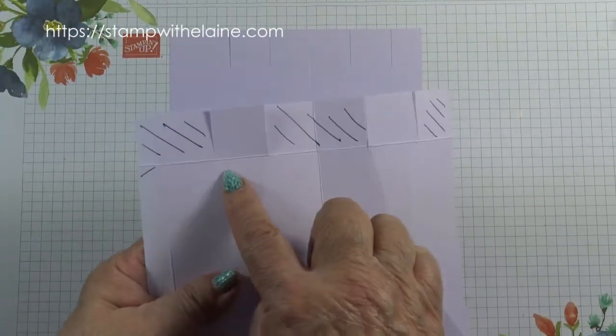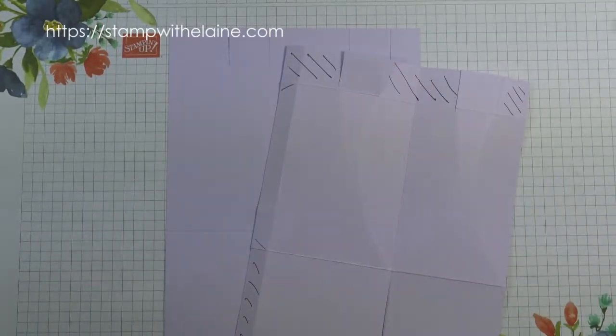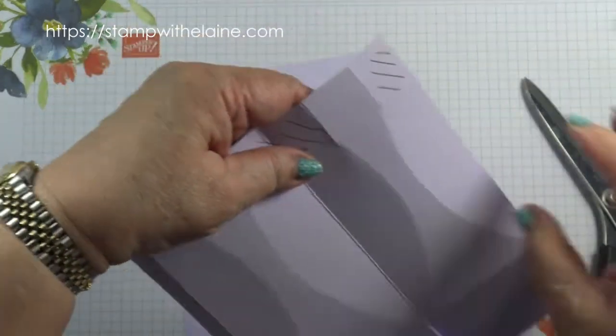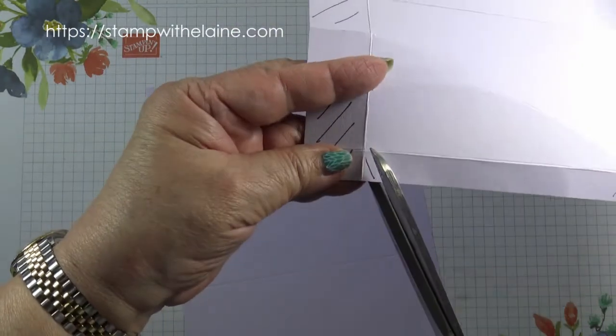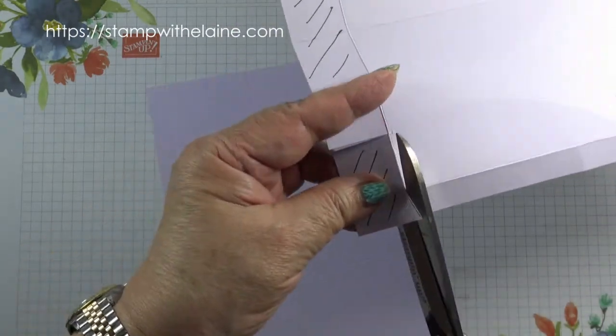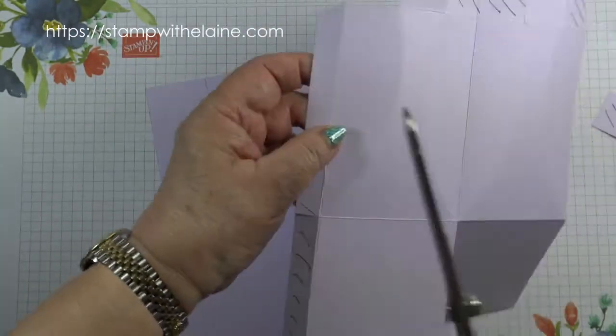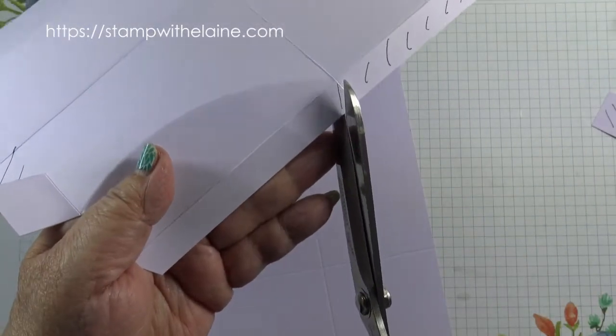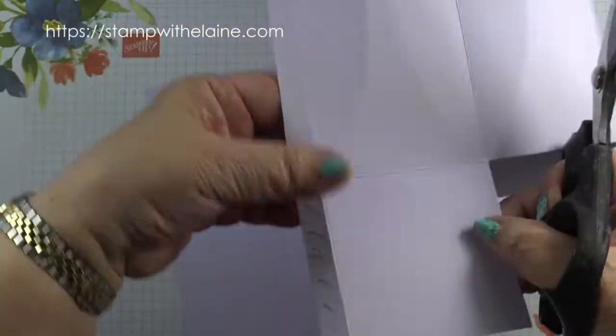Now you can see where I've marked it with the hashtags in black. Those are the bits that you want to cut off. You want to miter that corner and cut that bit off where the 1/2 inch score line is. Miter that corner and cut away that rectangle.